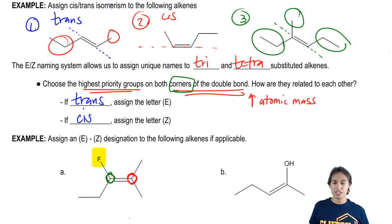Why? Because even though this group down here looks bigger, the fluorine has a higher atomic mass right away. So what that means is fluorine beats carbon. Fluorine is further down the periodic table than carbon is. So this is going to be my high priority up here.